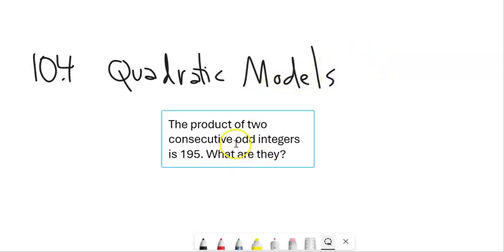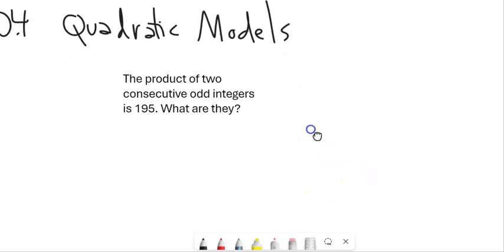So the first one says, the product of two consecutive odd integers - integers are just numbers that don't have a fractional piece, like negative 5, negative 7, or 10, 11 - but these are two consecutive odd integers, is 195. And what are they?